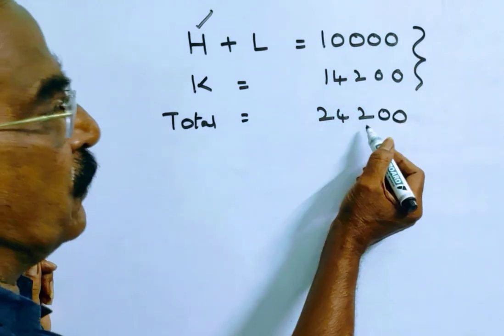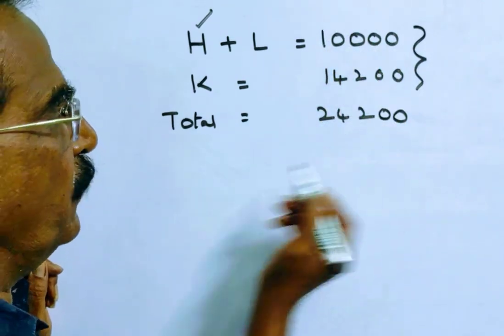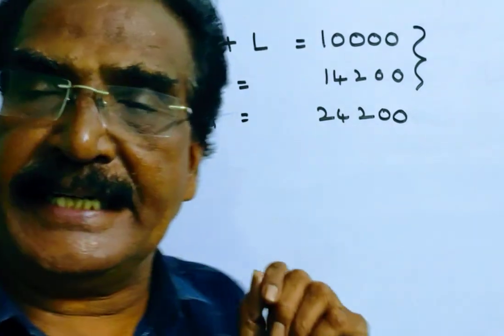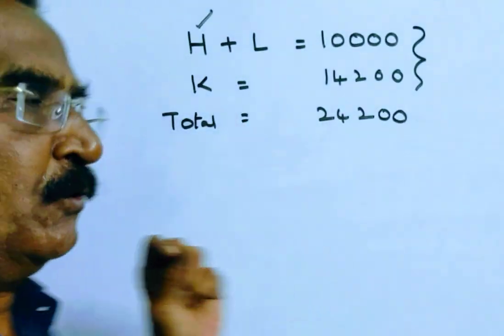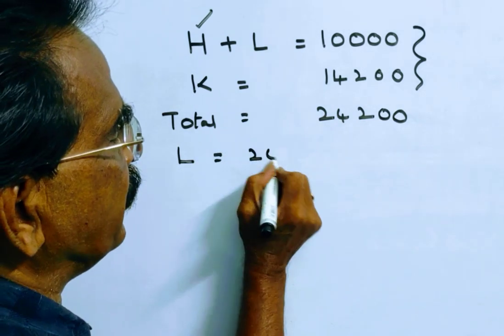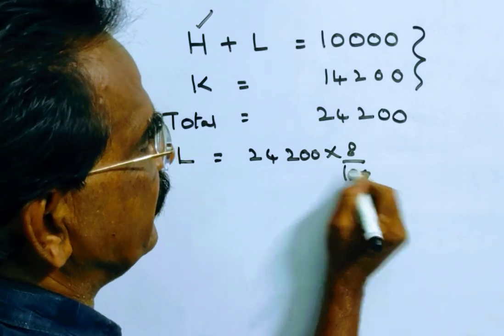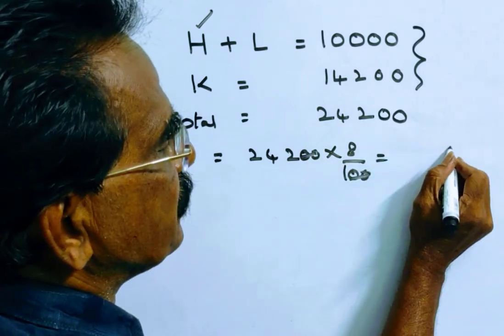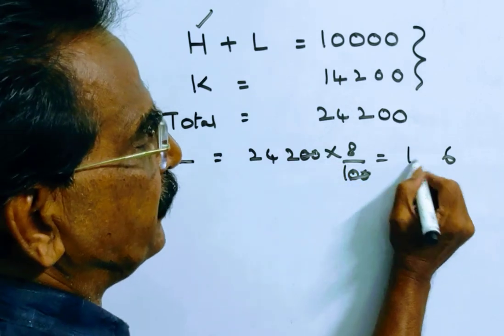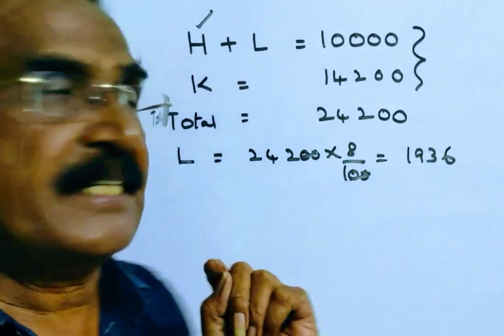So now total votes 24,200. Friends, here Lalith gets 8% of the total votes. 24,200 into 8% of the total votes is 1936. Lalith gets 1936.